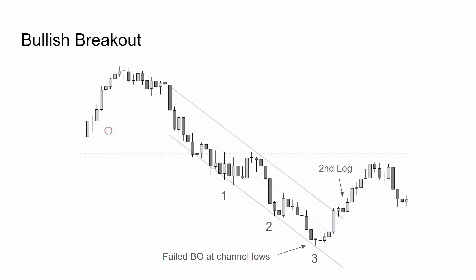Bullish breakout example. Here we have a bear channel, trading for a few hours, and then we get a failed breakout at the channel lows. Strong enough to break the trend line and we get a small second leg higher.